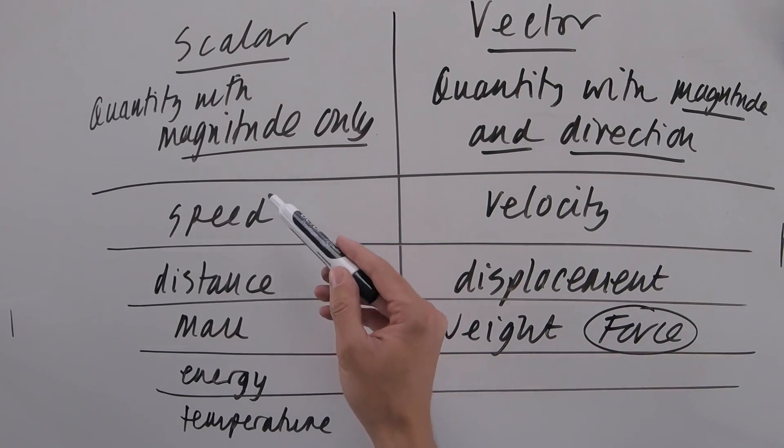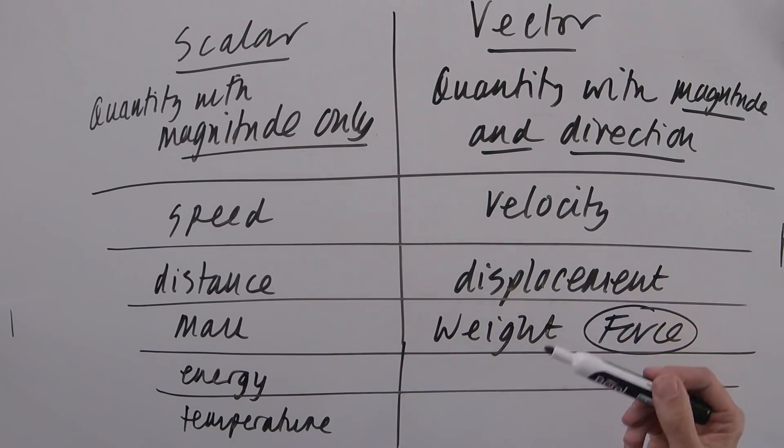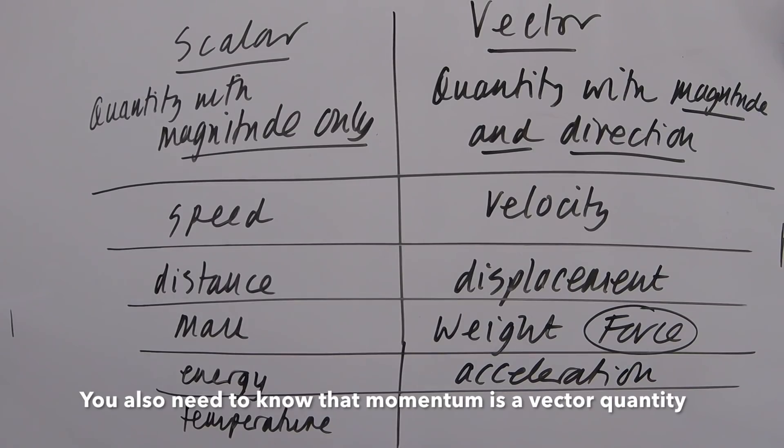The other one, so if there's four key scalars you need to know, there are also four key vectors. So velocity, displacement, force, and acceleration. So that's the basics. We just need to know the definitions and those examples.